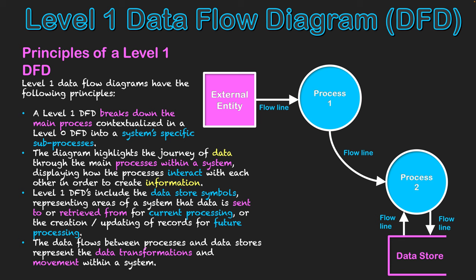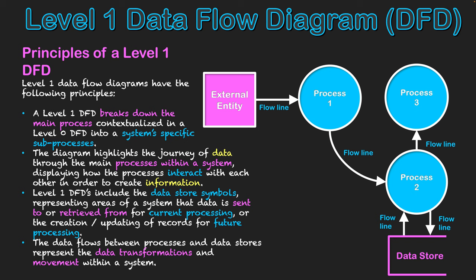Once process two is completed — perhaps conducting a calculation or figuring out some processing needed for the external entity — the result is sent to process three. The data along that flow line has clearly transformed from what happened in process two. Process three might turn it into a format required by the external entity, such as a receipt, invoice, or web-based format, and that information, written on the flow line, is sent back to the external entity, hopefully satisfying their needs.